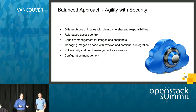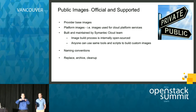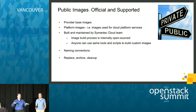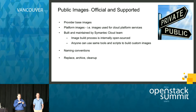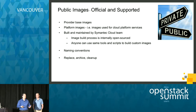Let's start with the different types of images. Every cloud has provider images. The public images are only the images that we, as Symantec Cloud, provide — we build these images and make them available to everyone. Those are official images: hardened, scanned, and secure. These are base images. There are also platform images — images we use to build our platform services, and people are welcome to use them. Richard will talk about how we build and internally open source these images.